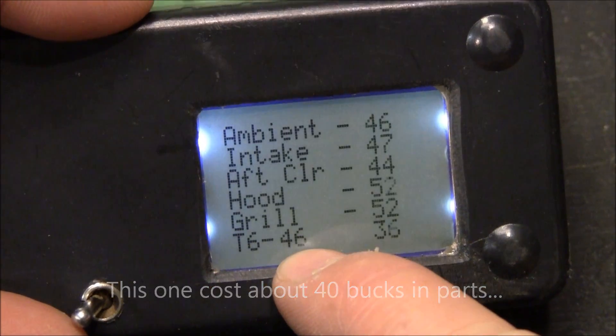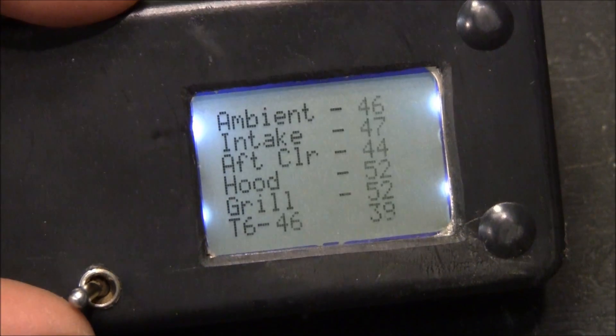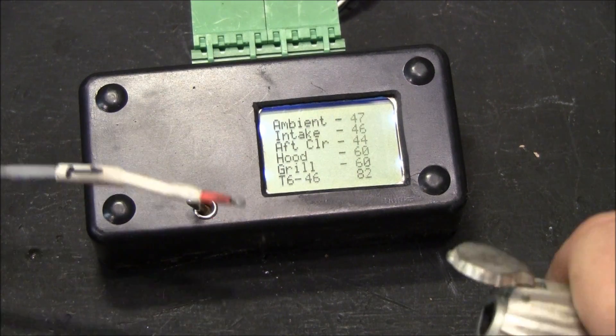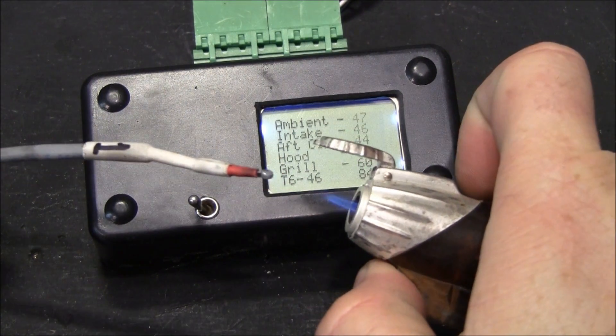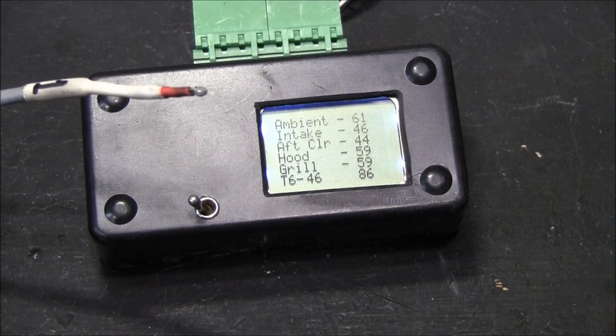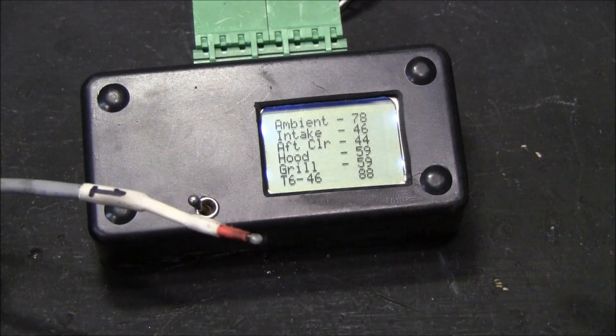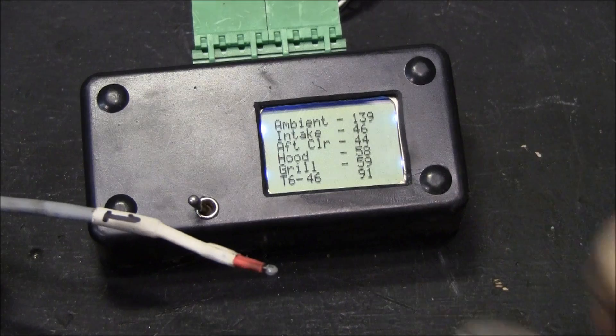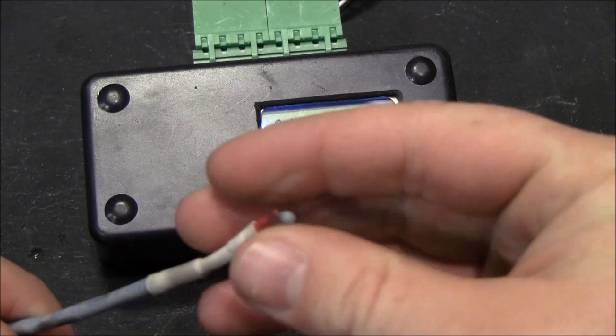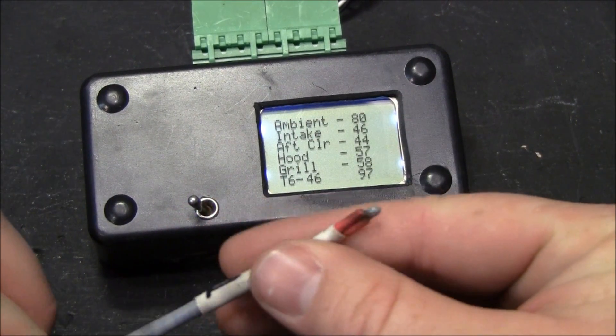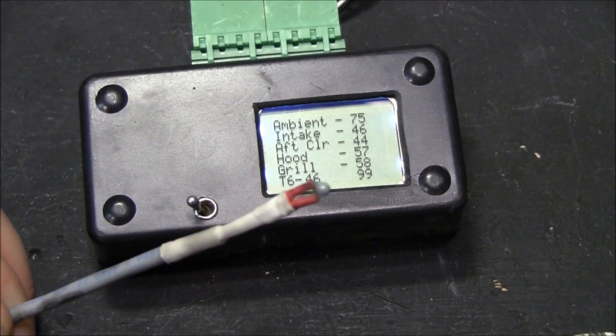So temperature six is actually 46. Here I'm going to grab a random probe and warm it up. This is obviously the top one. These are just little thermistors. They're like 50 cents each.